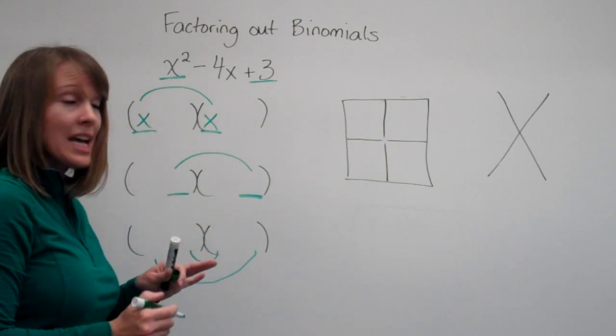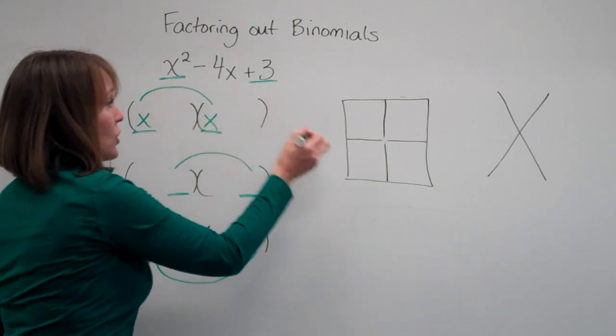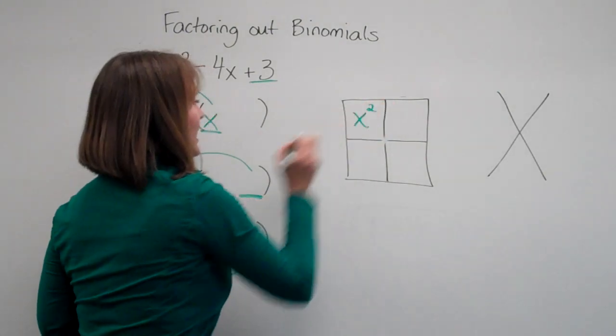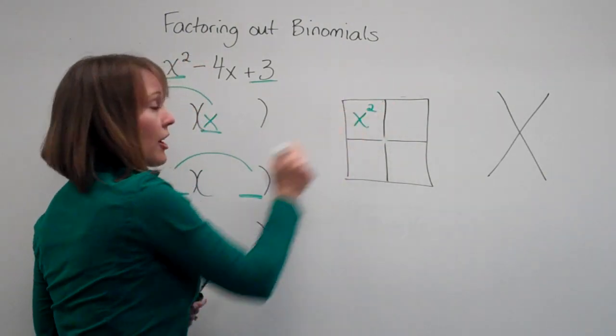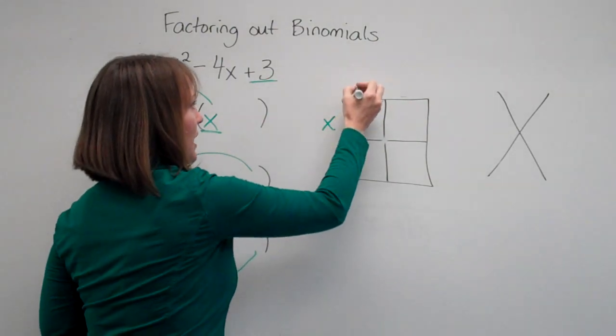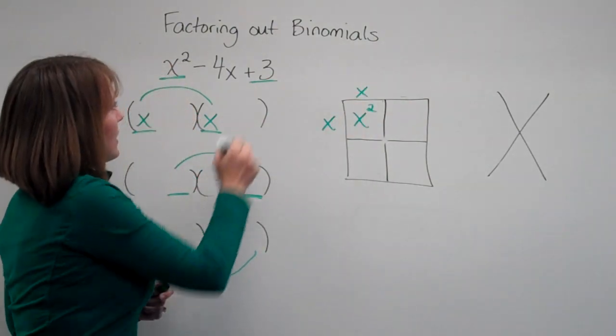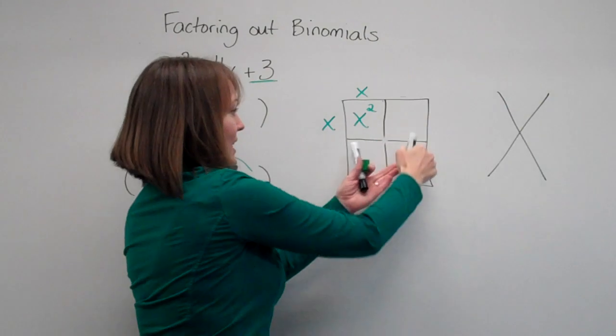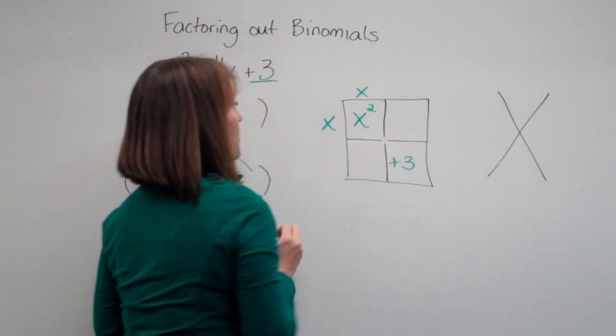Likewise, if we did that with the box, our x squared went in this first box. We multiplied together to get our x squared and we know that would have to be x times x. And our last numbers we multiplied together here to get our positive 3.